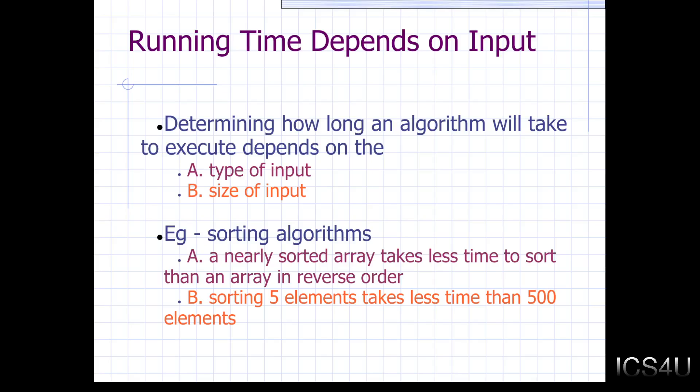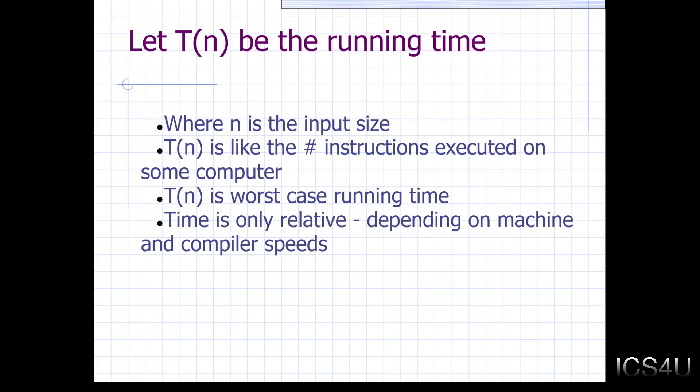So getting to the last point there, sorting algorithms with part A, that's with the type of input. A nearly sorted array, so with a nearly sorted array it will take less time to sort than an array in reverse order. Because if there's only a few things to swap around in bubble sort, there's going to be less swaps happening and it won't take as long. What about size of input? And that's something that I've already talked about a couple of times. Sorting five elements takes less time than 500.